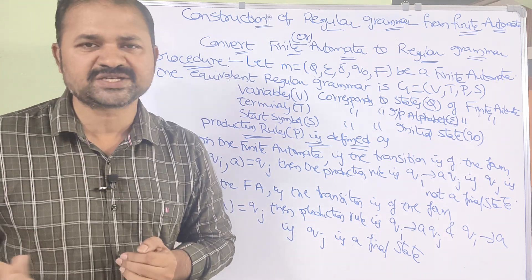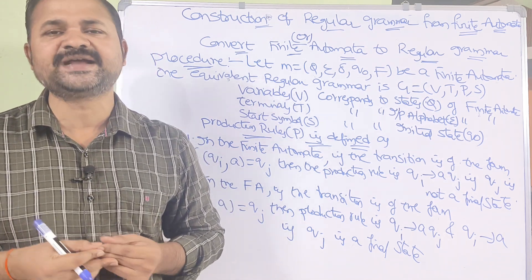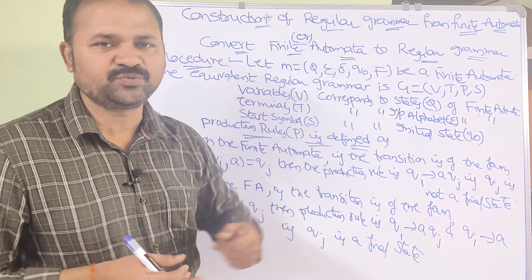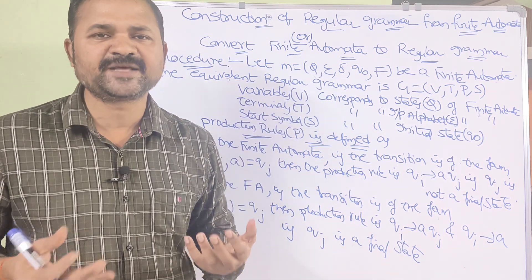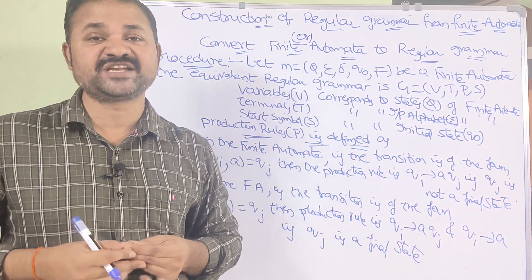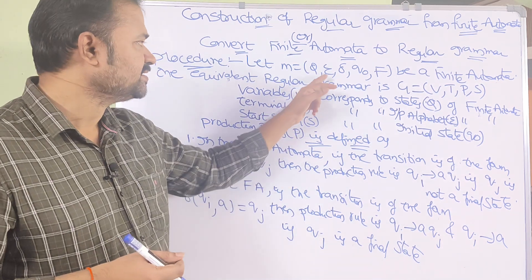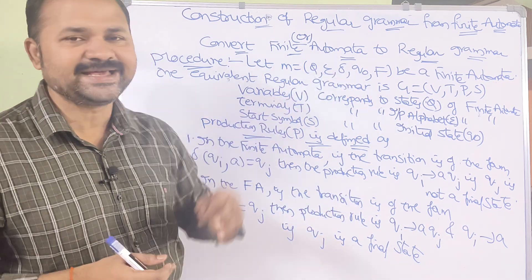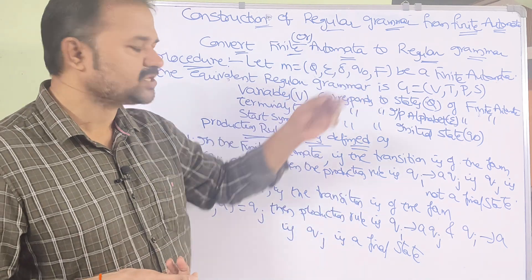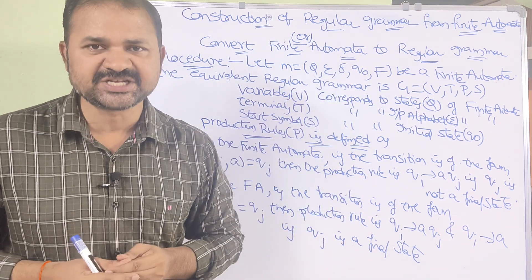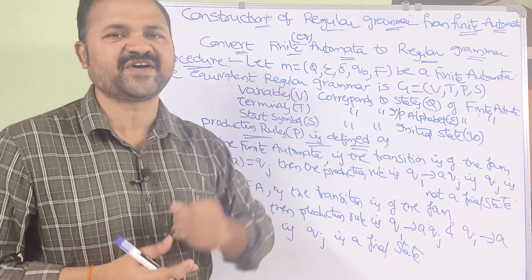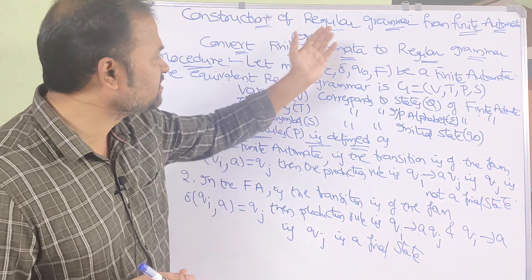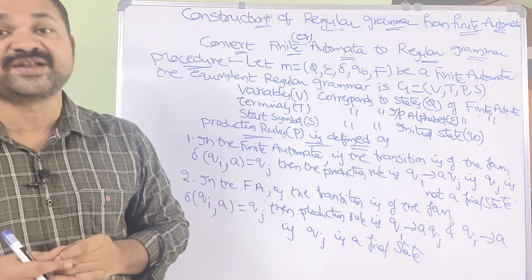Finite automata contains five tuples. Q represents a finite set of states. Sigma means input alphabet. Delta is a transition function. q0 is the initial state. And capital F is the final state. Now we have to construct the equivalent regular grammar.